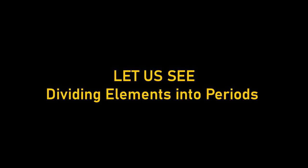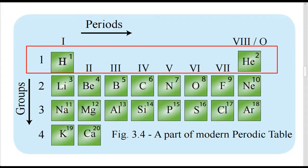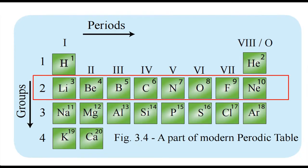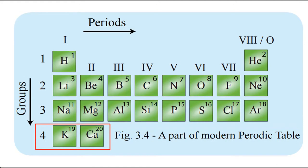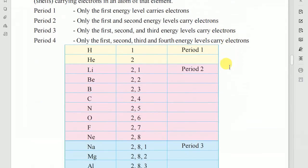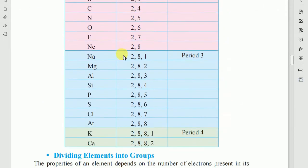Let us see dividing elements into periods. Period 1: in it only the first energy level carries electrons. Period 2: only the first and second energy level carry electrons. Period 3: only the first and third energy level carry electrons. Period 4: only the first, second, third, and fourth energy level carry electrons. Look at the chart in front of you from your book page.